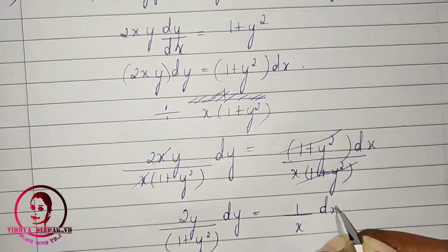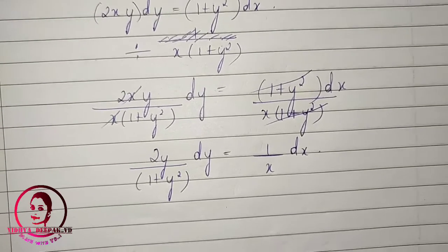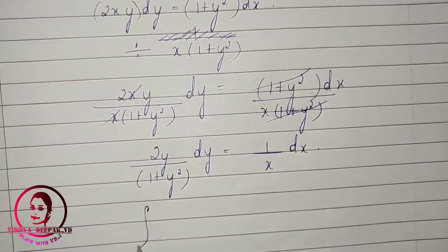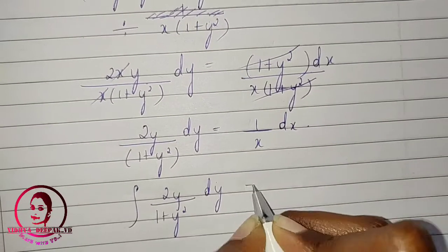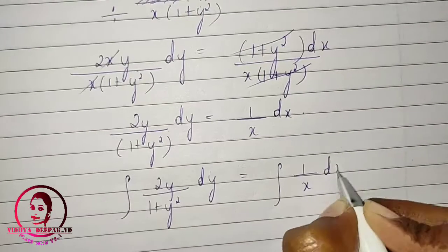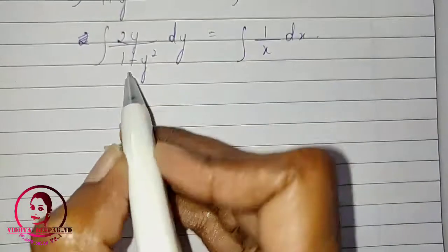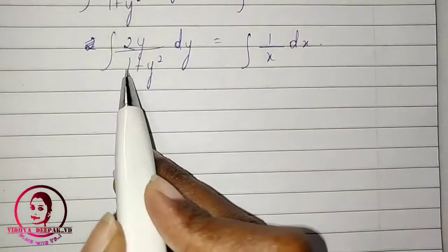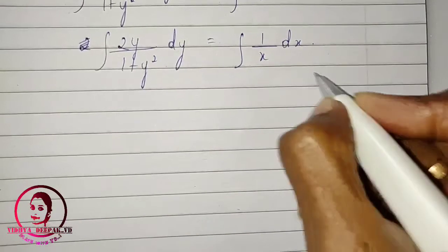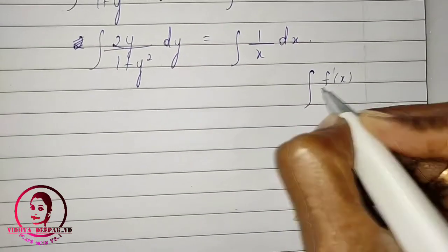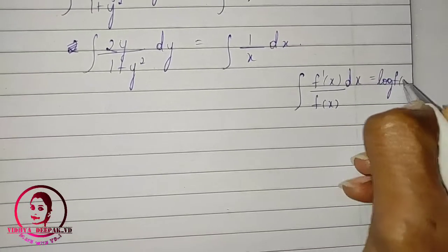Now integrate both sides: integral of 2y/(1 + y²)·dy equals integral of (1/x)·dx. Notice that the differentiation of (1 + y²) is 2y, which is in the numerator. Using the formula: integral of f'(x)/f(x)·dx = log|f(x)|.